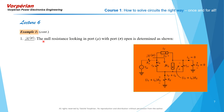We now determine the null resistance looking into port mu while port pi is in its reference state — an open circuit. We have done this calculation before in a previous video when we had a single capacitor connected between the collector and base, and we review it here for further reinforcement of a null calculation example.